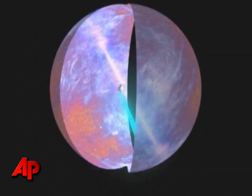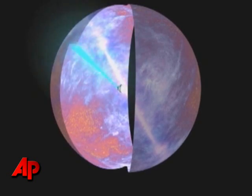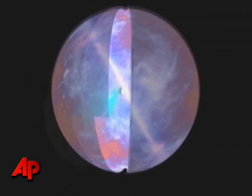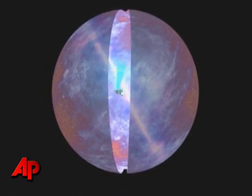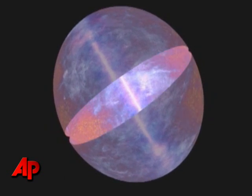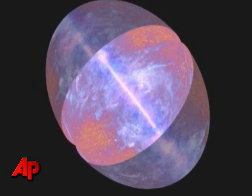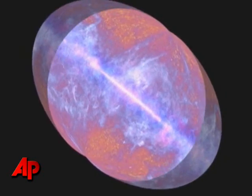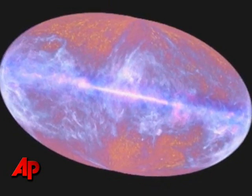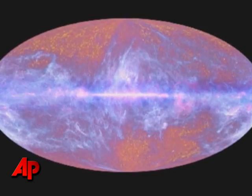This is the way that Planck essentially makes a picture — a map of the whole sky. It is basically the only thing we have which is a remnant of the Big Bang, taking us right back to the beginning of our universe.